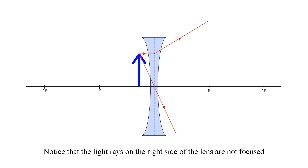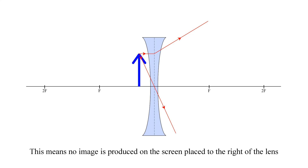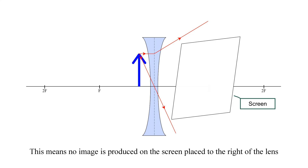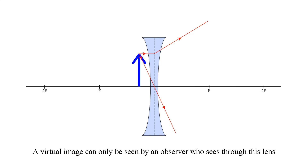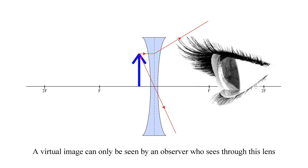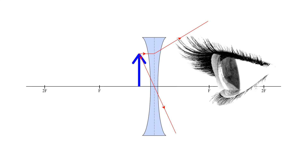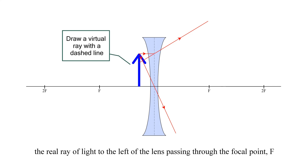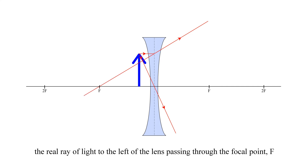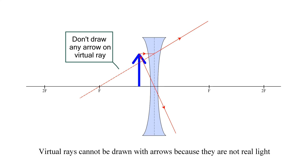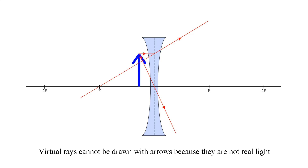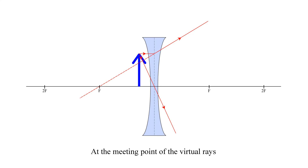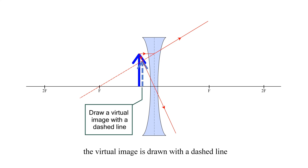Notice that the light rays on the right side of the lens are not focused. This means no image is produced on the screen placed to the right of the lens. The virtual image can only be seen by an observer who sees through this lens. To draw the virtual image, a dashed line — a virtual ray — is drawn from the real ray of light to the left of the lens, passing through the focal point, F. The virtual rays cannot be drawn with arrows, because they are not real light. At the meeting point of the virtual rays, the virtual image is drawn with a dashed line.